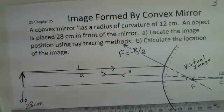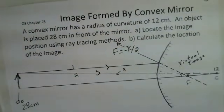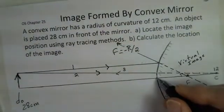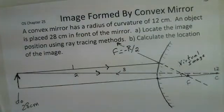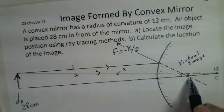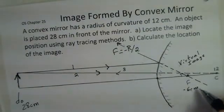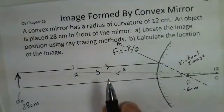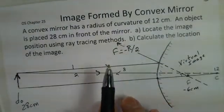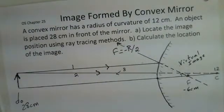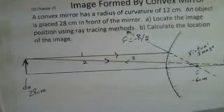And let's calculate this image location. Again, our values are measured from the mirror. Twenty-eight centimeters out to the object. The focal point back here is minus six centimeters. The focal length is minus the radius of curvature divided by two. The radius was given as twelve centimeters, so the focal length is minus six.